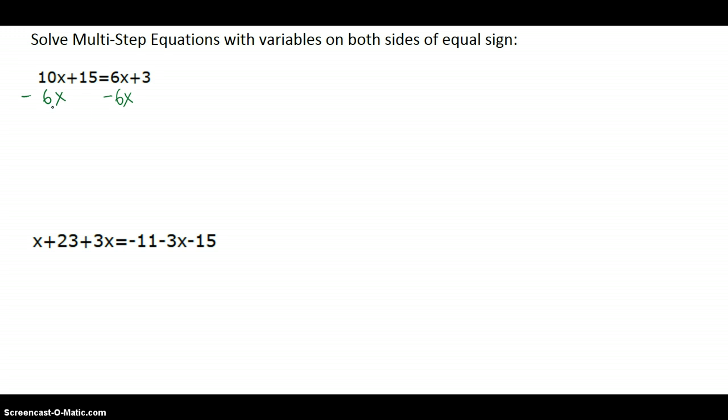And if you notice, what I get is 10x minus 6x is 4x. We still have the plus 15, but now we have that equaling 3. We have all the variables on one side. Now it's just a two-step equation.